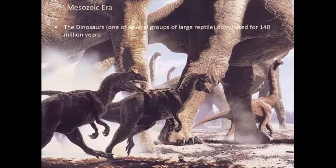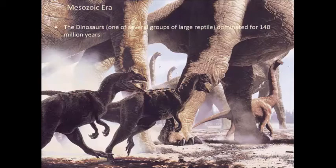Dinosaurs were just one group of large reptiles on the planet during the Mesozoic — they're defined by certain skeletal characteristics we won't get into here. There were other groups that were large reptiles but are not technically called dinosaurs. The dinosaurs themselves dominated a lot of the large life on the planet for about 140 million years.